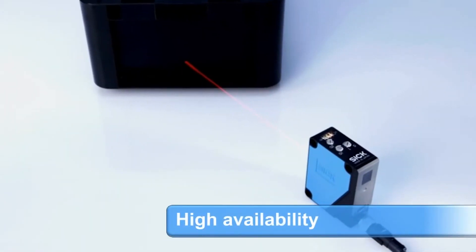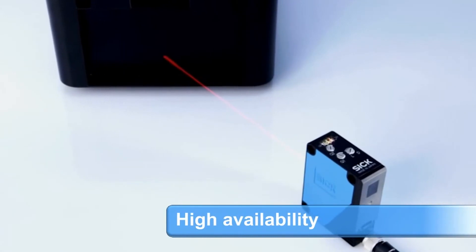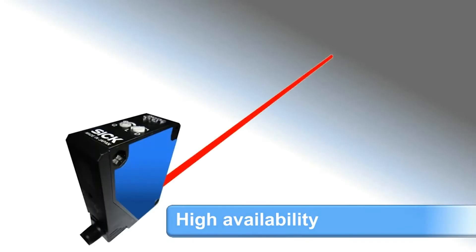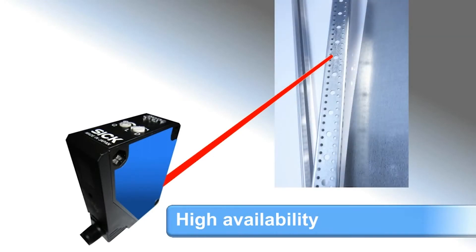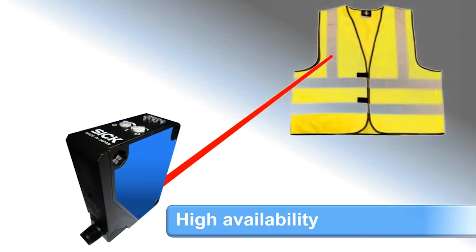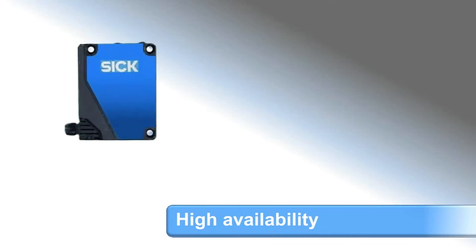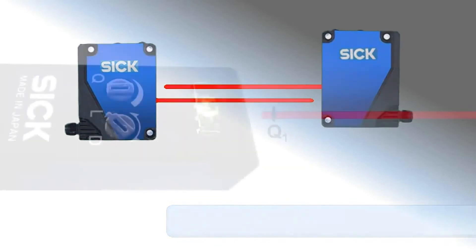Depending on the sensing distance and material, detection is assured even at an angle. The sensor ignores reflections from objects in the background, such as shiny metallic surfaces, windows, or safety vests. And there's no crosstalk when sensors are mounted opposing each other.